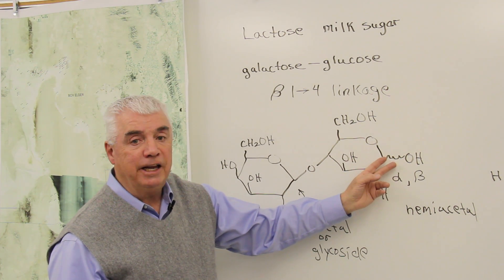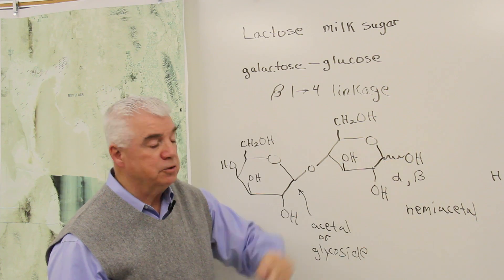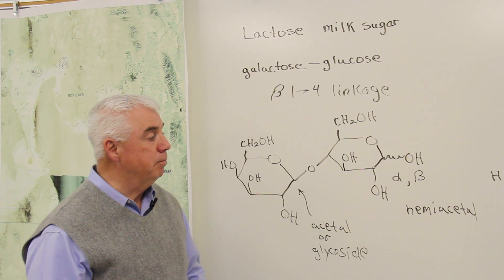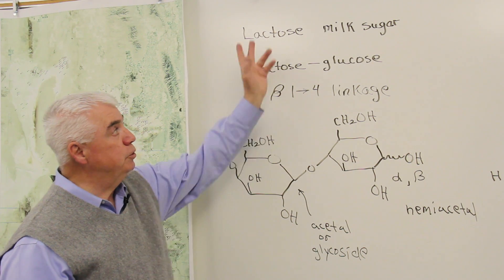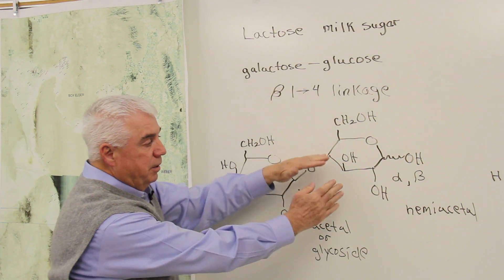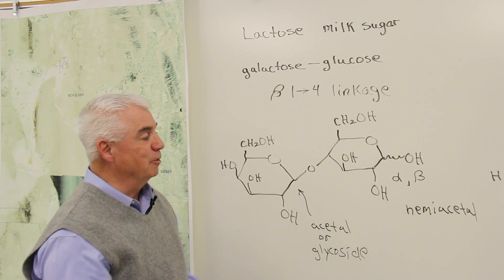And rather than indicating alpha or beta, I used a wiggly line to represent that it's a mixture of the alpha and beta. Both are possible. So there are two forms of lactose. This ring is fixed, but this ring is opening and closing, opening and closing.